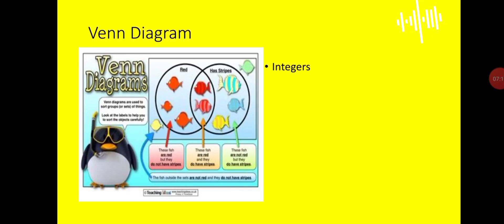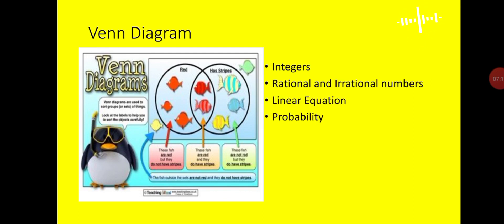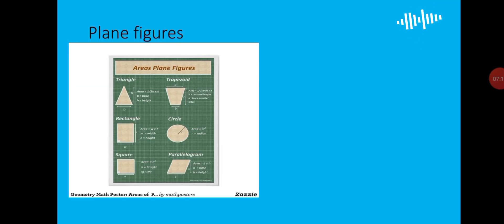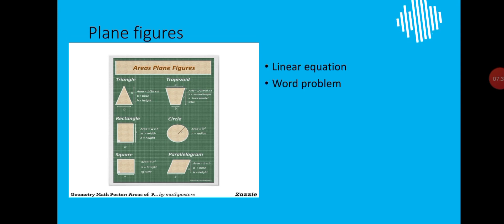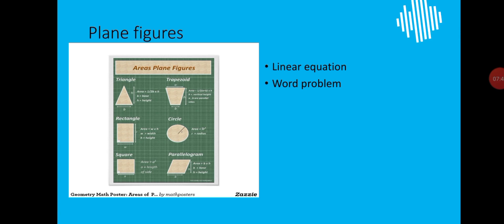For Venn diagrams, you need to be well abreast with your integers, rational and irrational numbers, linear equations, probability, and word problems — because sometimes questions require you to understand statements before you can move on. For plane figures, you need the formulas for triangle, circle, parallelogram, and rhombus. Sometimes questions are given as word problems, and your change of subject will come in because you may need to make a particular variable the subject.